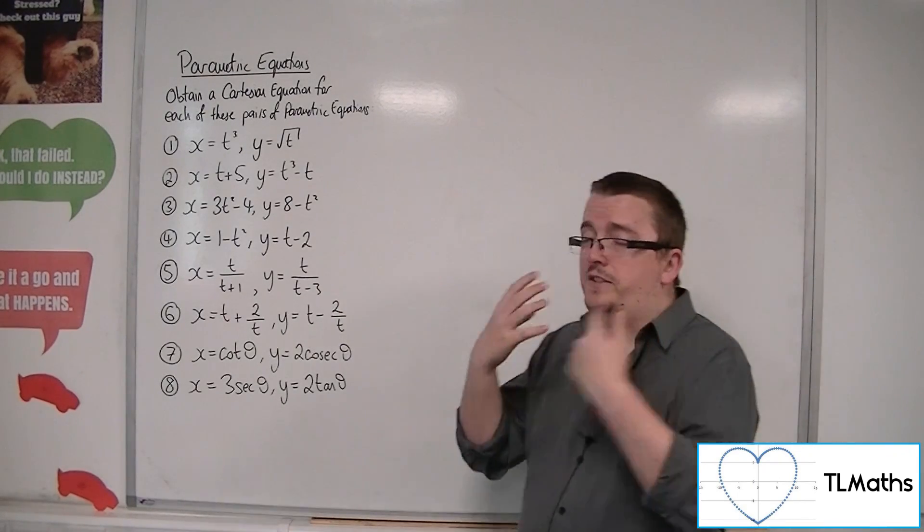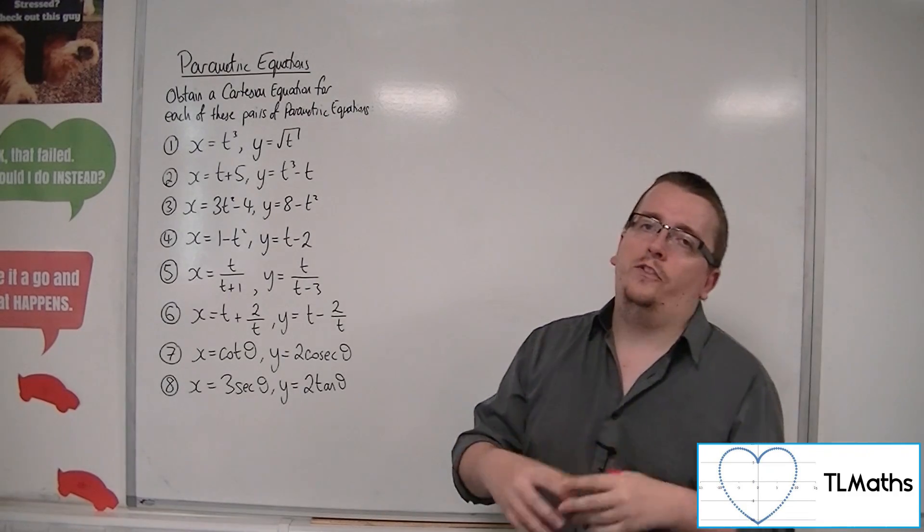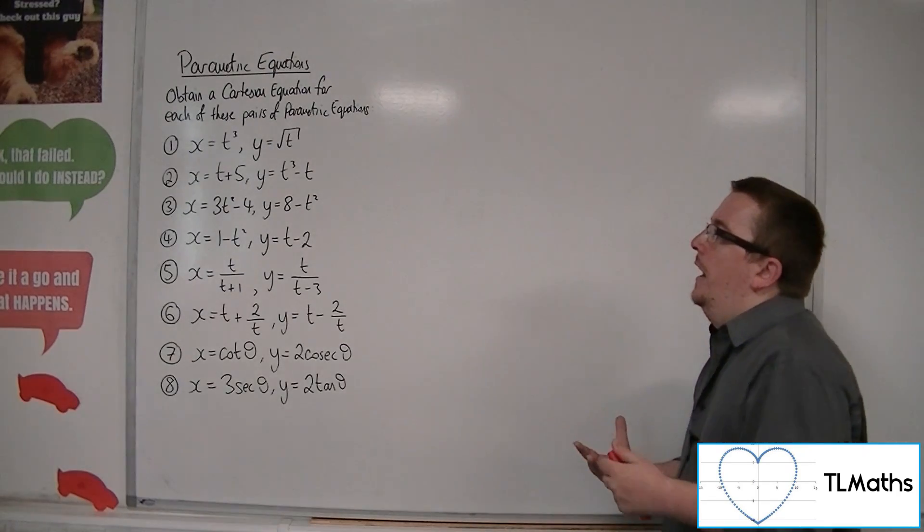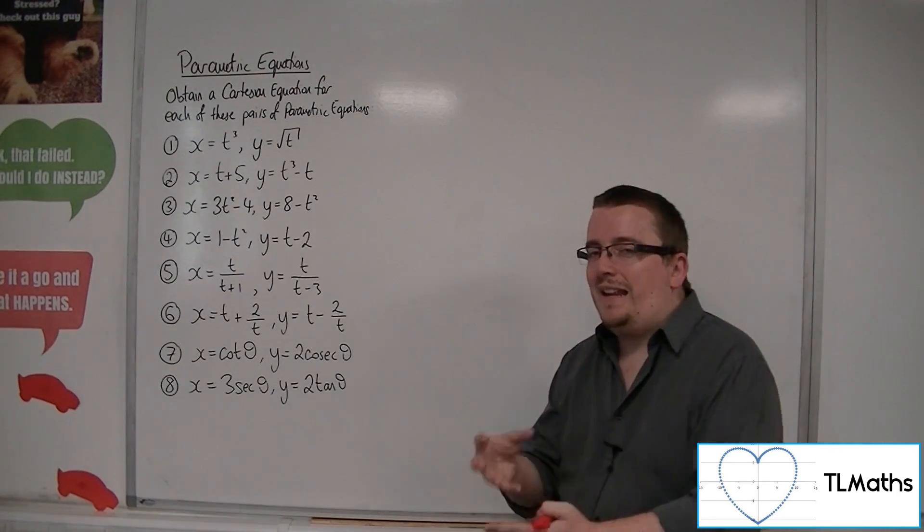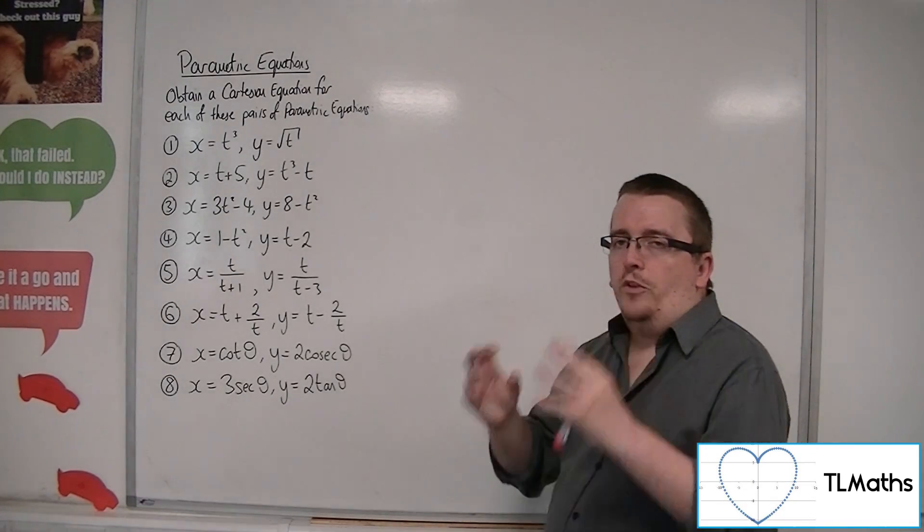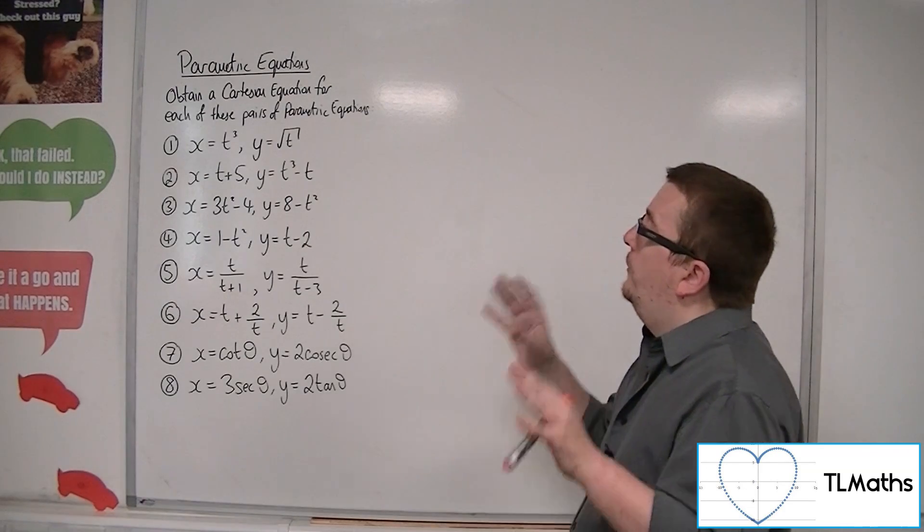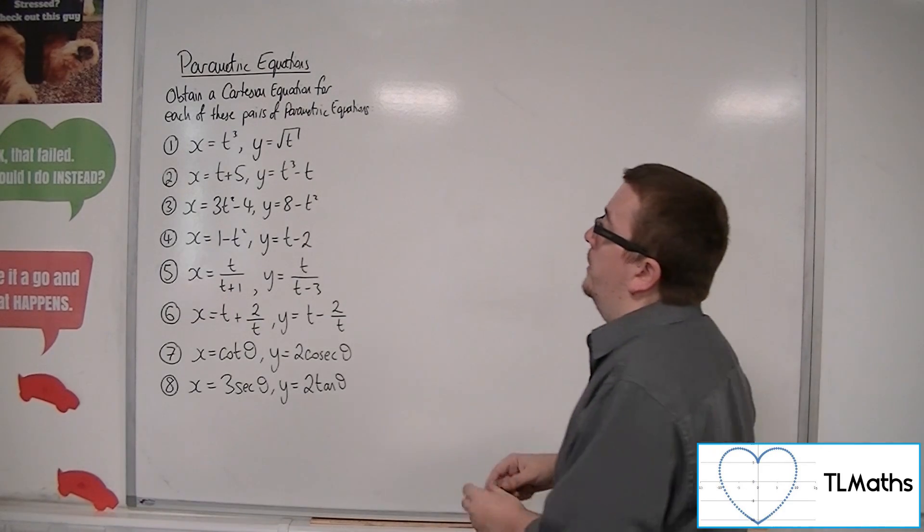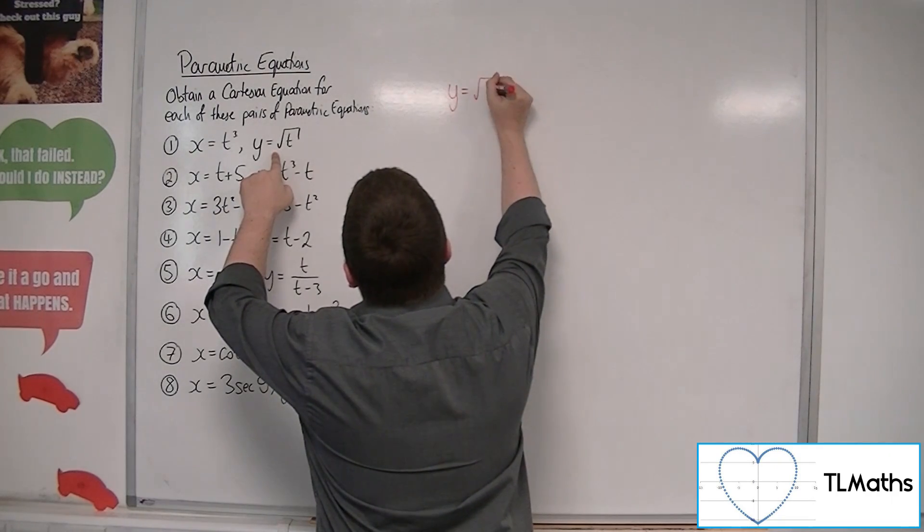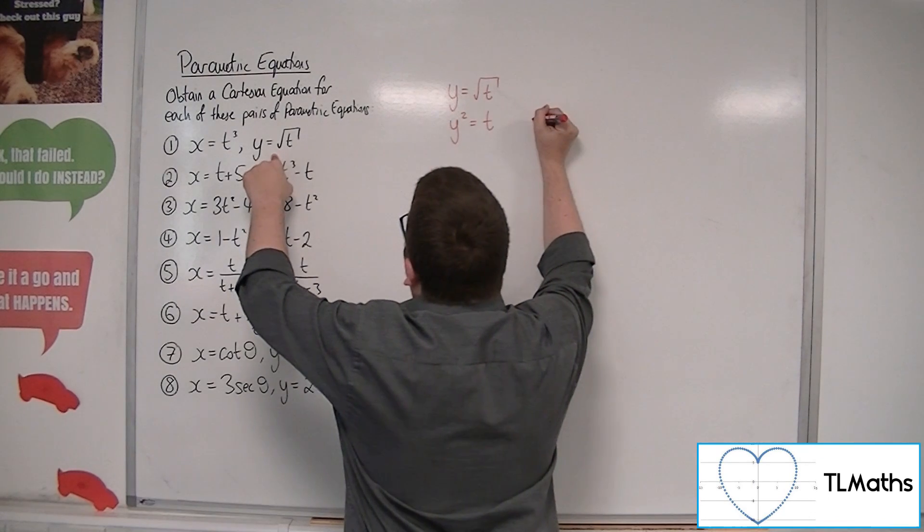However, I try and tend to avoid anything that has a square root, cube root, fourth root, anything like that. The reason being is that it can get quite fiddly and quite messy, and certainly with a square root, I want to avoid getting any plus-minus involved. Okay, so, instead, what I can do is if I start with the y equals root t, and then I square both sides, that means that y squared is equal to t.